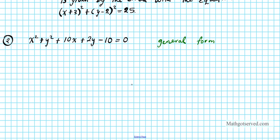What kind of conic is this? We can change it into standard form first and then identify it. Just by looking at it, we notice two squares with a plus in between, and since it's general form we look at the coefficients — both are 1. If you have two squares with a plus and equal coefficients in general form, you have the equation of a circle.